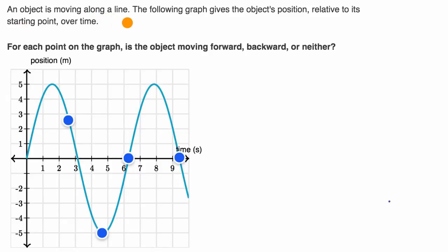An object is moving along a line. The following graph gives the object's position relative to its starting point over time. For each point on the graph, is the object moving forward, backward, or neither? So pause this video and try to figure that out.